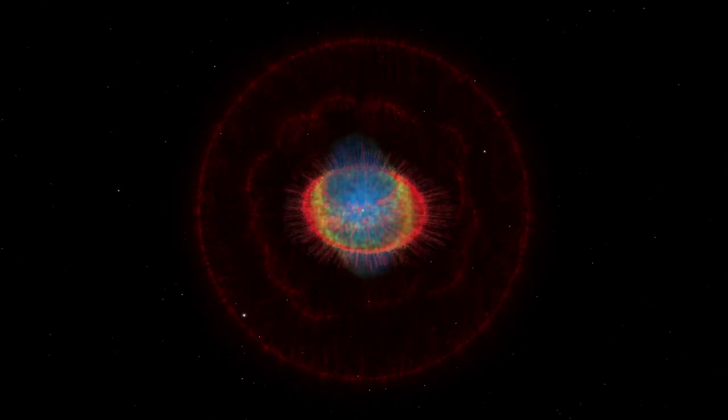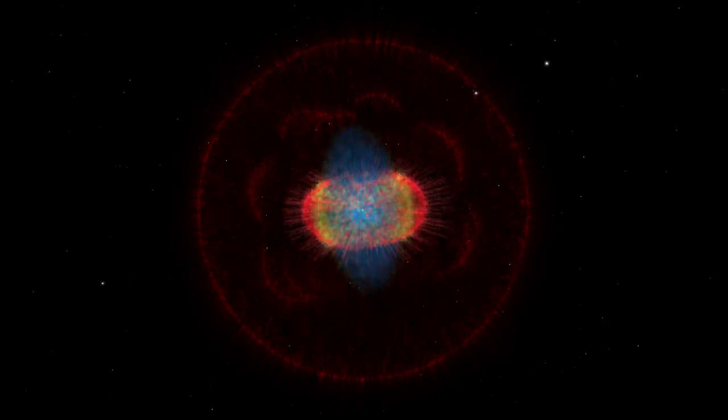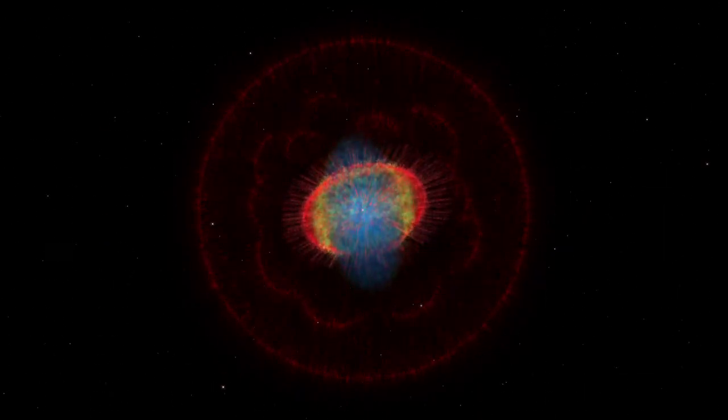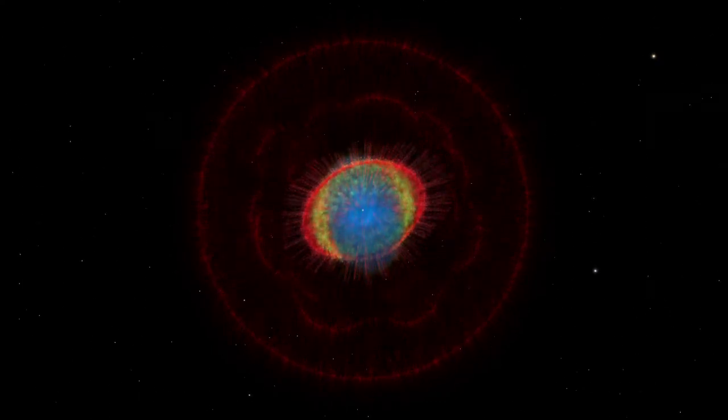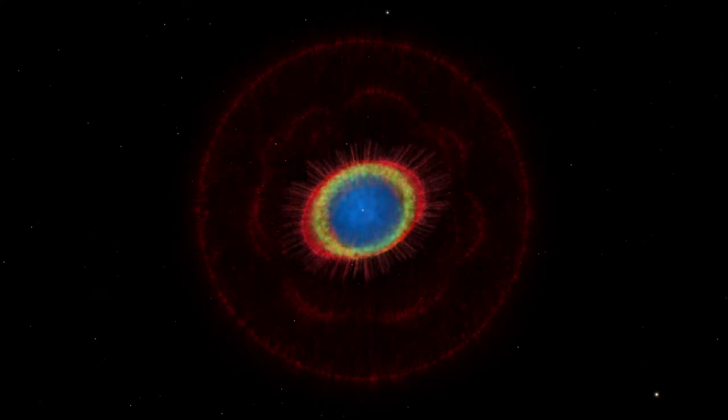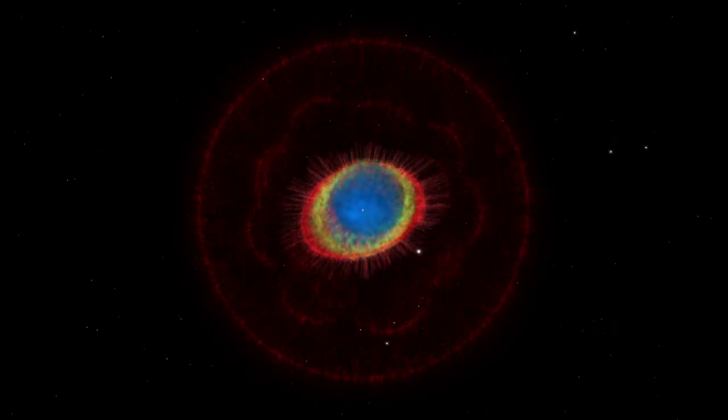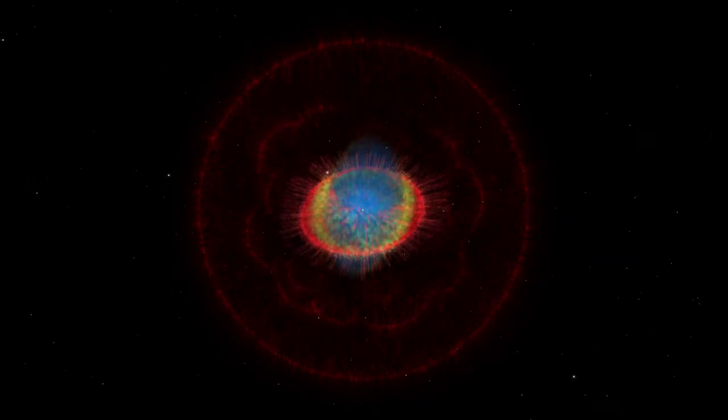This detailed three-dimensional model of the ring nebula will help astronomers understand the last stages of a star's life. Our sun is expected to have a similar fate in about five billion years.